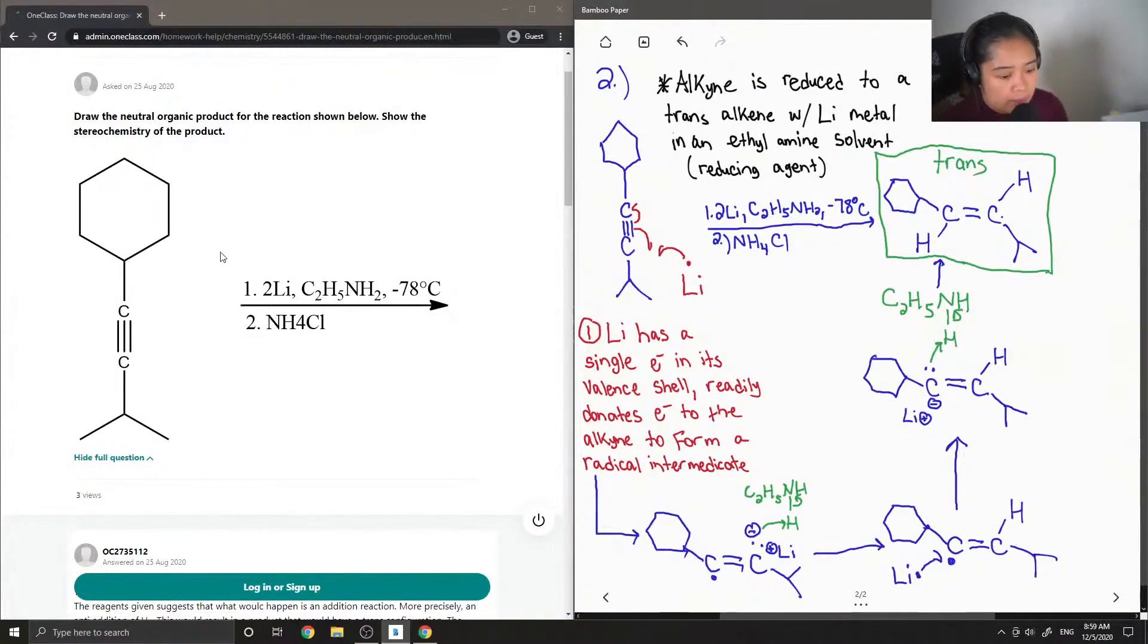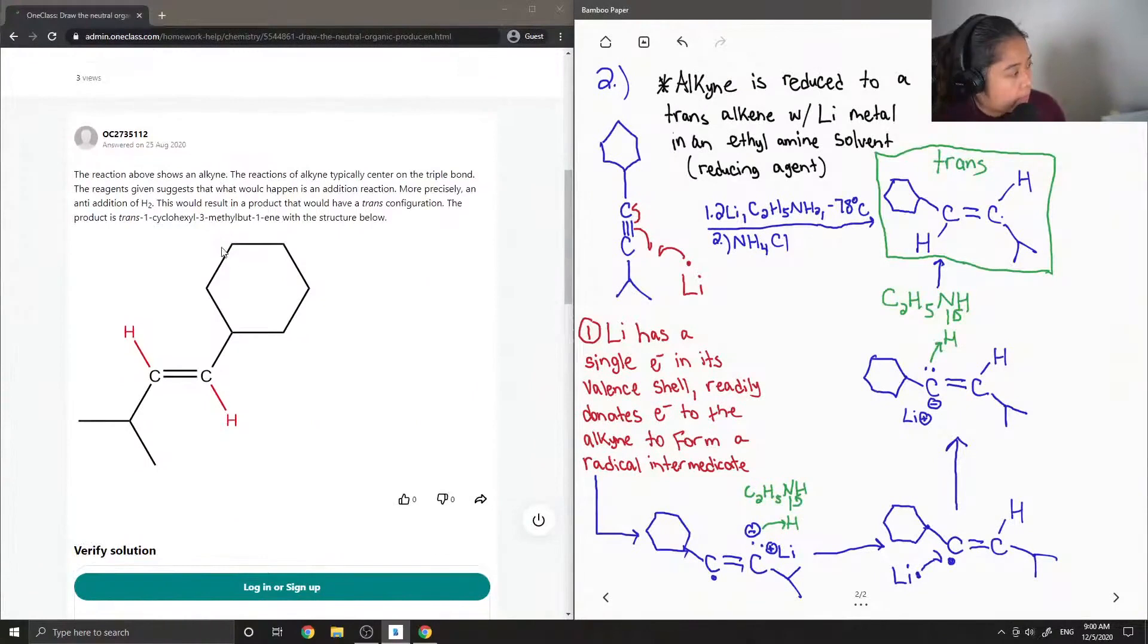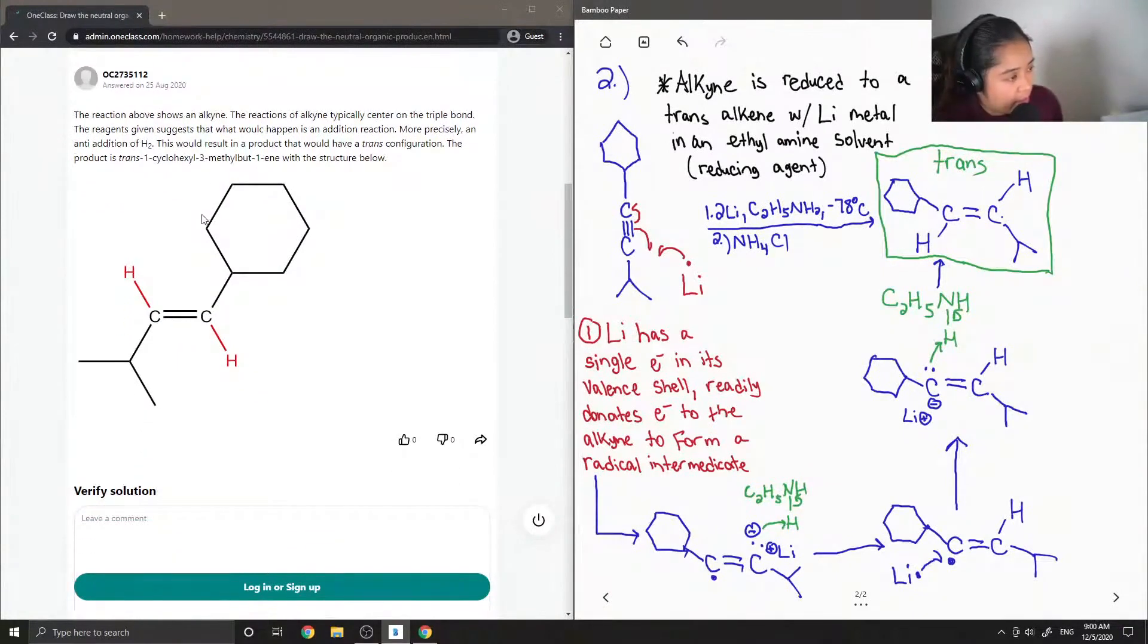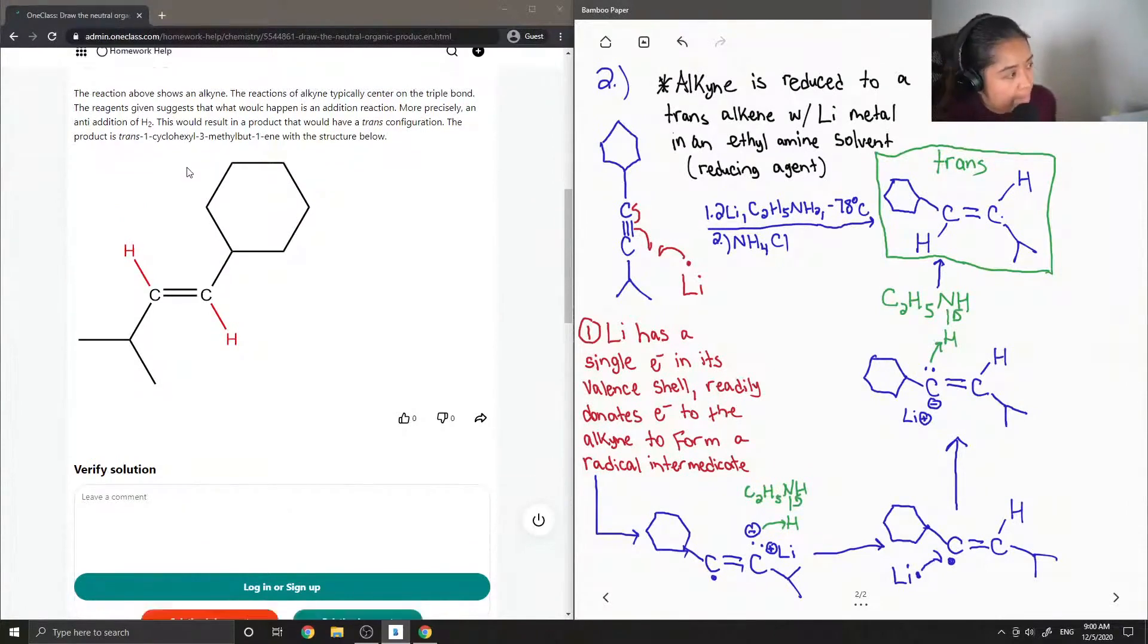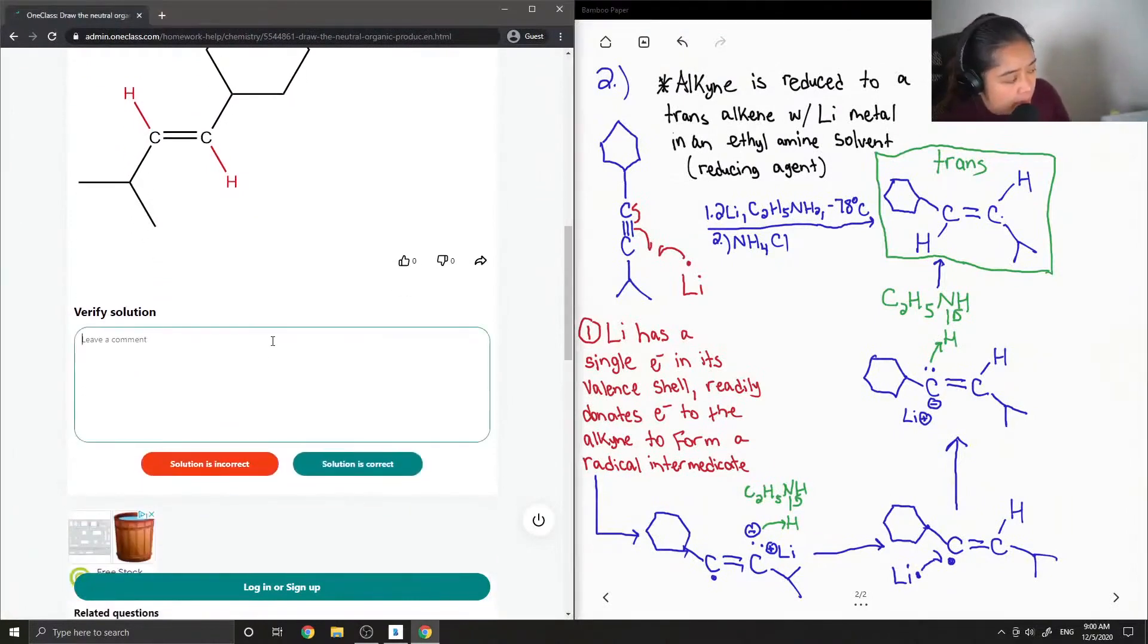Okay, so let's see what the junior tutor said. The reaction above shows an alkyne. The reactions of alkyne typically center on the triple bond. The reagents given suggest that what would happen is an addition reaction. More precisely, an anti-addition of H2. This would result in a product that would have a trans configuration. The product is trans-1-cyclohexyl-3-methyl-but-1-ene with the structure below. Yep, so the solution is correct.